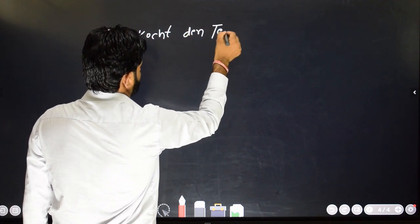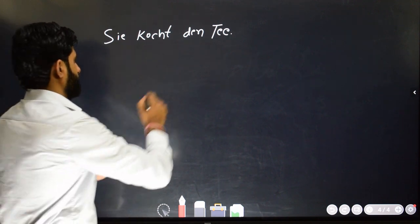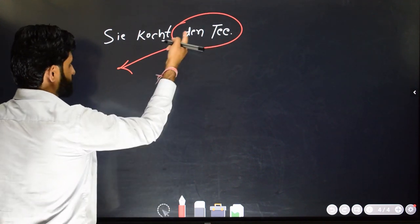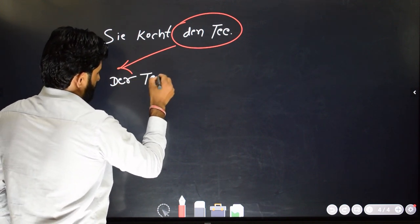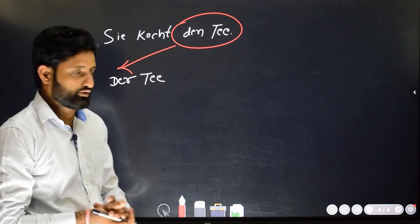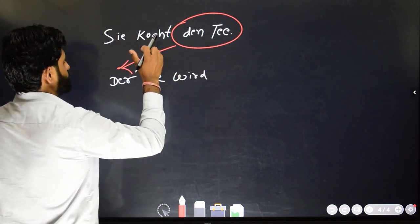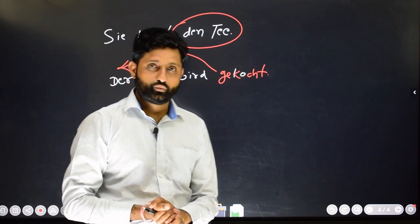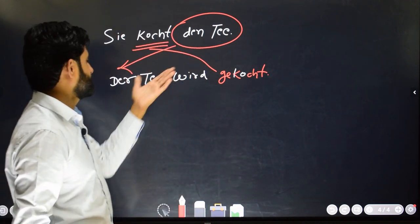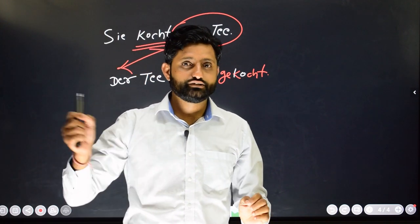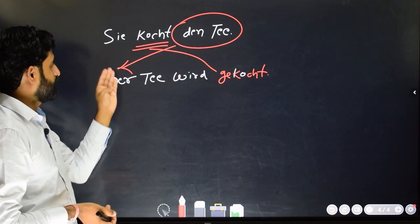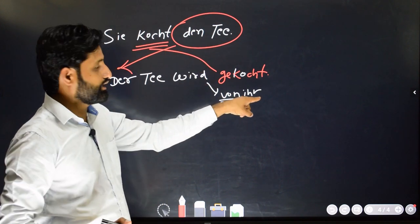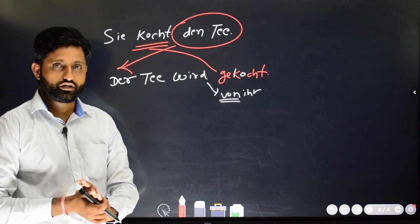More examples: 'Sie kocht den Tee.' This is the basic sentence. What do we need to do? Bring the object to the first position. 'Den Tee' is in accusative. I will convert this accusative form into nominative: 'der Tee.' 'Tee' is singular, so the conjugated form of 'werden' will be 'wird.' The Partizip II of 'kochen' is 'gekocht.' So: 'Der Tee wird gekocht.' Instead of using 'Sie kocht den Tee', we can use 'Der Tee wird gekocht.' If you want to mention who is cooking the tea: 'Der Tee wird von ihr gekocht.' Note that 'von' is a dative preposition, so 'sie' goes into dative and becomes 'ihr.'